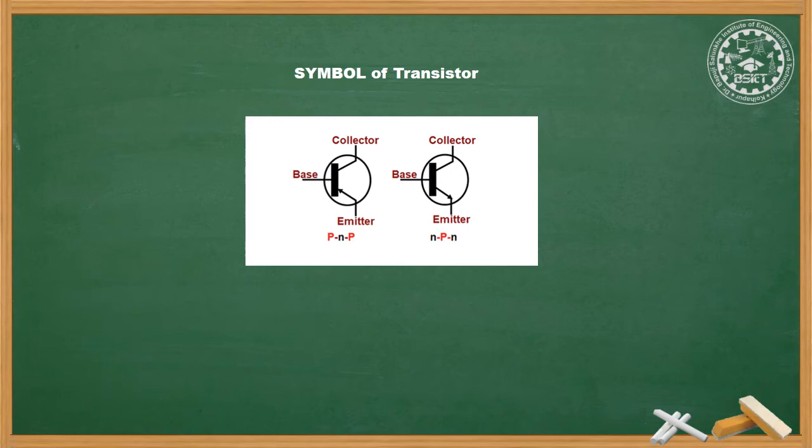These are the symbols of transistors — NPN and PNP. If you observe, the only change in these two symbols is the direction of the arrow. In the NPN symbol, the emitter arrow points away from the base junction, whereas in PNP the arrow direction is towards the base junction. Otherwise the symbol is the same.